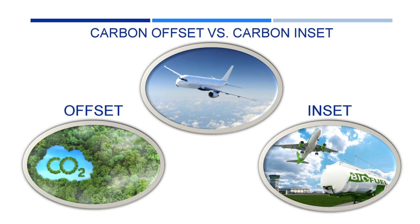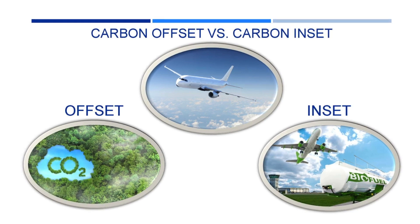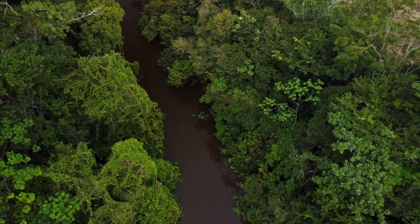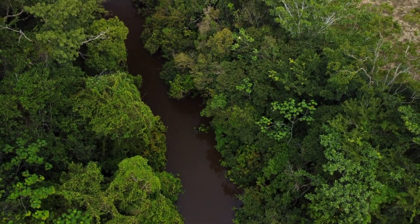The easiest way to explain the difference is through an example — the airline industry. Let's say the airline industry has $250 million dollars to invest in meeting their greenhouse gas goals. That airline could take that money and invest in a reforestation project in the Amazon, where planting those trees sequesters carbon out of the atmosphere, which generates greenhouse gas credits or carbon credits.